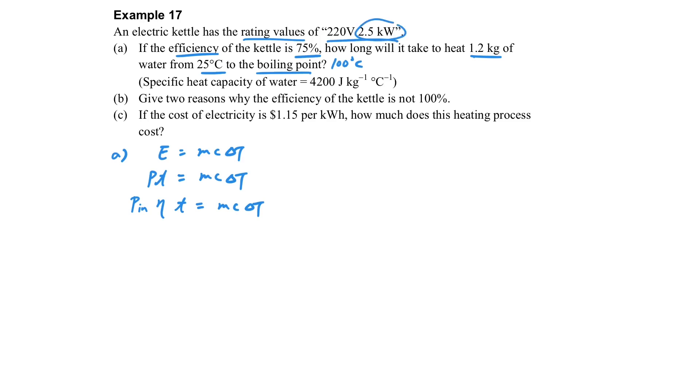And now, because we know the power in with the efficiency, we have to rearrange the equation in this way. And the very important habit is to substitute the efficiency in terms of a decimal number rather than the percentage, so that it's easier to handle when we use the calculator. And so, we can find part A and solve it easily.